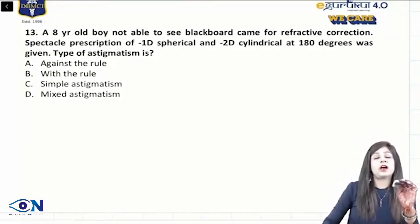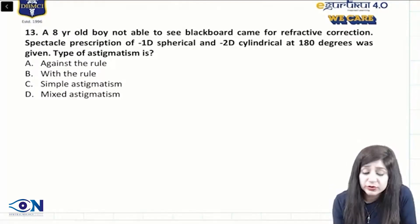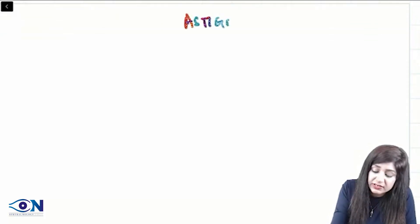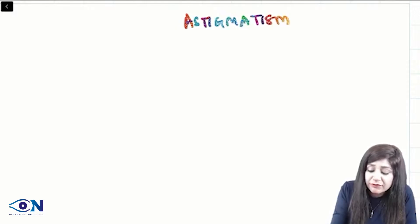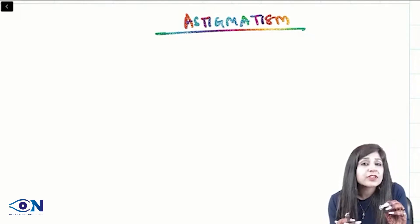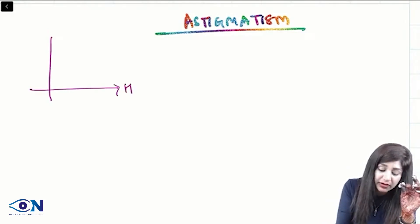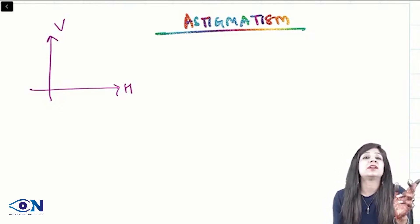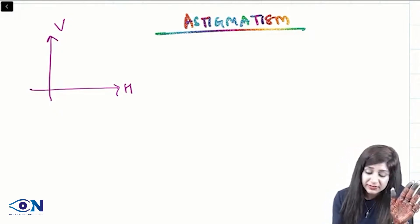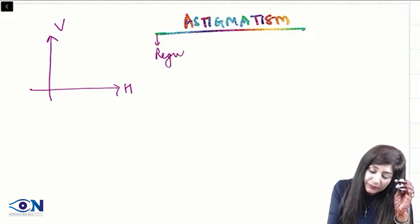Now, an important topic: how to solve questions related to astigmatism. Before we go to astigmatism questions, let me give a brief overview. Whenever a patient has an uneven refractive surface — the cornea or the lens — the refractive power in the two meridians, horizontal and vertical, will always be different. When we have different powers in different meridians, that is called astigmatism.